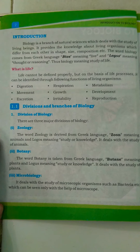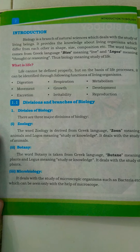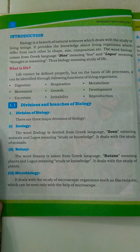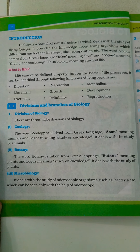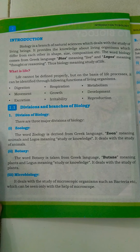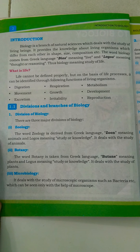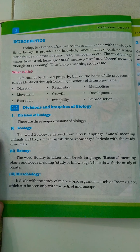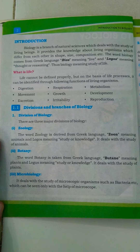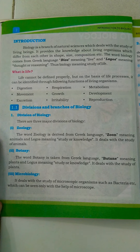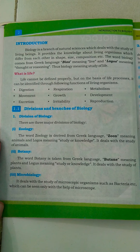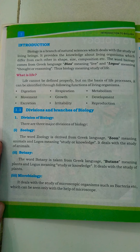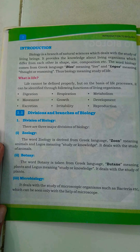Biology can be defined as the branch of natural sciences which deals with the study of living things. Biology is the branch of natural science, meaning all other branches such as chemistry, physics, and mathematics along with biology are considered as the natural sciences.